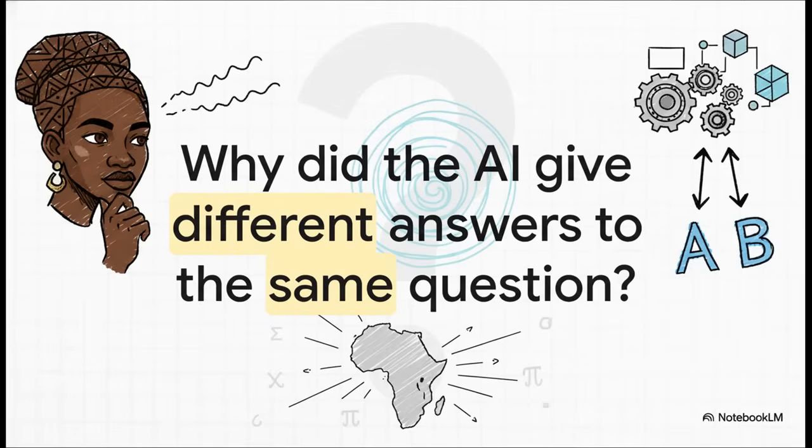Our whole story really kicks off with this simple but incredibly deep question from a graduate student, Fondi. She's noticed something weird, a ghost in the machine, you could say. She asks an AI the exact same question twice, but she gets two totally different answers. This isn't just a random glitch. It's a clue, a major clue that starts to peel back the curtain on how these systems actually think.